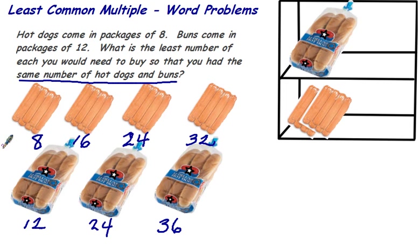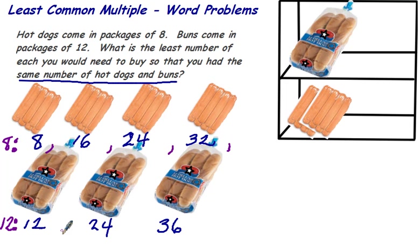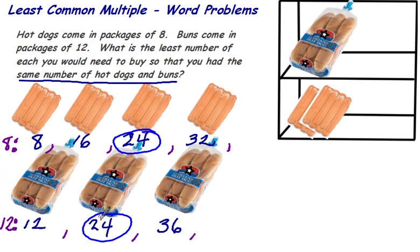Can you see what we've actually done here is to find the least common multiple of 8 and 12. We found the multiples of 8 would be 8, 16, 24, 32, and so on. The multiples of 12 would be 12, 24, 36, 48, and so on. So we want to find the least number that matches, and here it is right here.